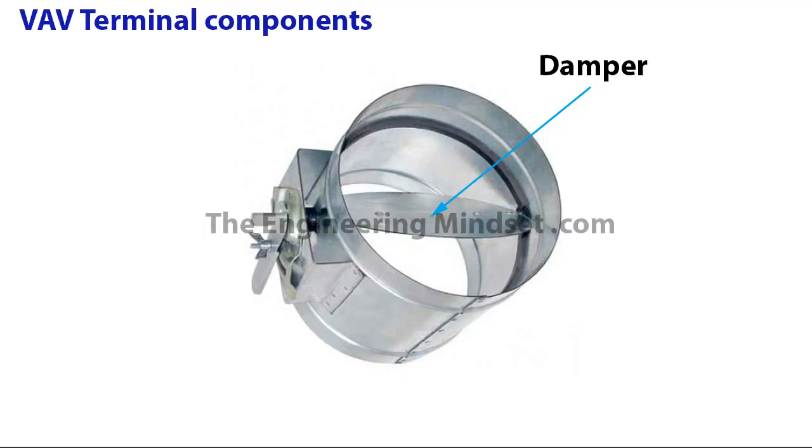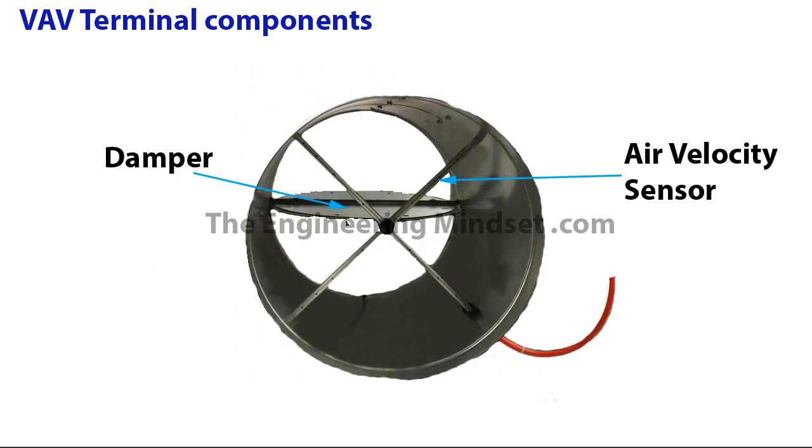Let's just show you what some of the components look like. So this first part here, we've got the damper. Here you can see the air velocity sensor and also the damper. So this is looking through towards into the VAV box.